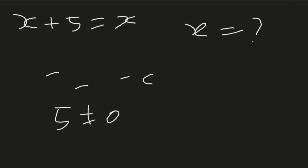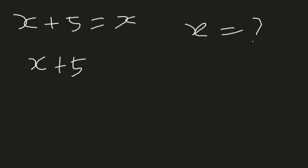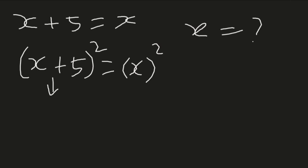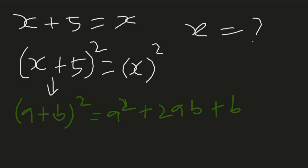Here's the method. The first thing we're going to do is square both sides. If we do so, we're going to expand this using the quadratic identity that tells us that (a + b)² is equal to a² plus 2ab plus b².